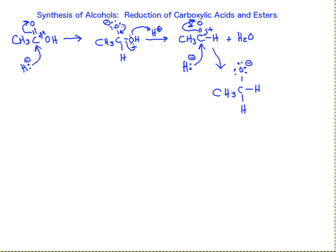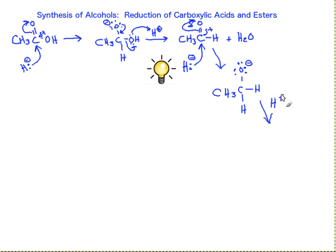Again, we see this negatively charged alkoxide — light bulb. Can I reform this carbonyl? In this case, the answer is no. We don't have a good leaving group here, so the next step, upon the addition of acid, would just be protonation of the alkoxide to form our final primary alcohol.